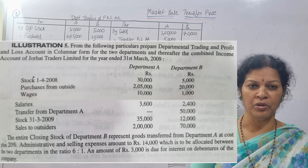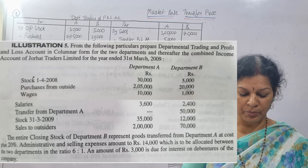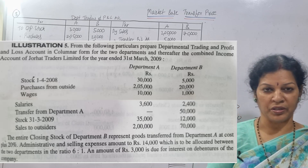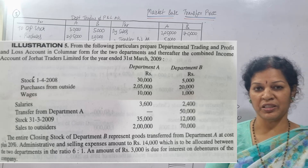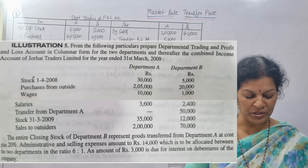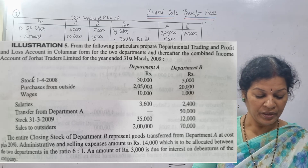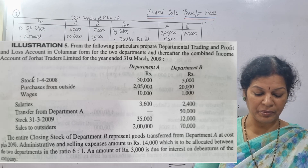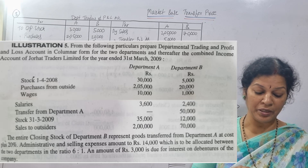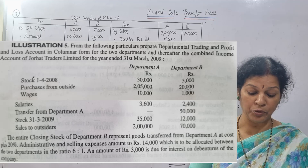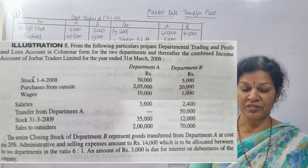Next, salaries are also given separately — 3,600 and 4,400. This comes on the profit and loss account debit side. Then, transfer from Department A — Department A to B — transfer amount 50,000.